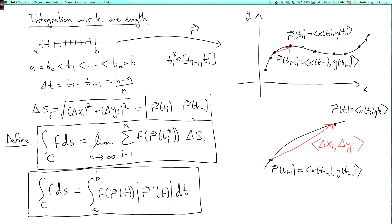The idea is that because delta si is the square root of delta xi squared plus delta yi squared, in the limit, sort of heuristically, you're going to get dx squared plus dy squared. That's going to give you this r prime of t.